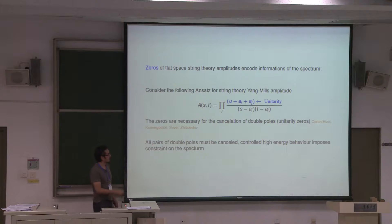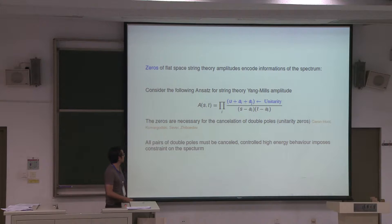This characterization of string theory doesn't use the world sheet at all. Once you say you want to cancel the double poles in this way, you immediately get all the features of string theory that you can get from a world sheet. These zeros are necessary from unitarity and have been termed 'unitarity zeros.' You'll hear more of this in Zohar's talk tomorrow.